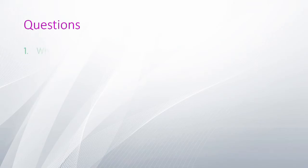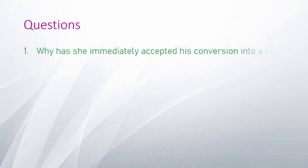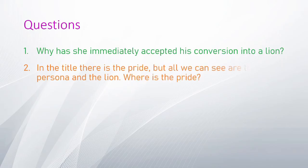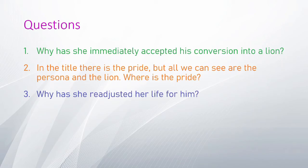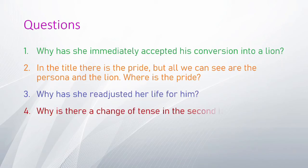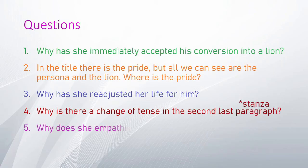There are six questions. Number one: why has she immediately accepted his conversion into a lion? Secondly, in the title there is 'the pride', but all we can see are the persona and the lion — where is the pride? Number three: why has she readjusted her life for him? Number four: why is there a change of tense in the second paragraph? Number five: why does she empathize? Number six: what is the persona trying to say in the poem?